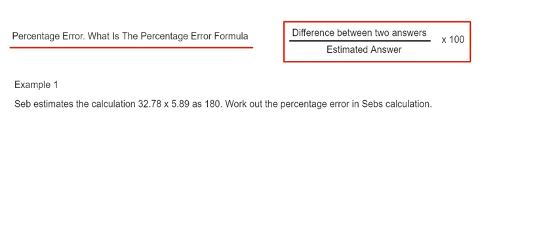Hi guys, welcome back. This is Maths 3000. Today I'm going to show you how to work out a percentage error using the formula in the red box. First, work out the difference between the estimated answer and the real answer, then divide that by the estimated answer and times by 100.